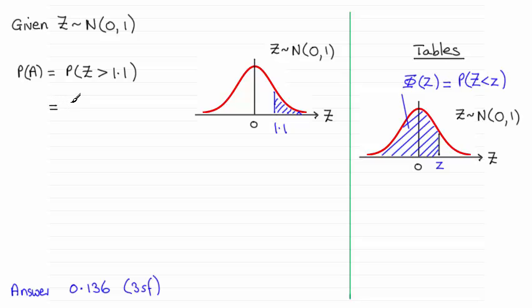So what we've got here then is that this is equal to 1 minus the probability of Z being less than 1.1. Okay, so that's the whole area minus the area to the left of 1.1. And that would give us the probability of Z being greater than 1.1. So we just use our tables.